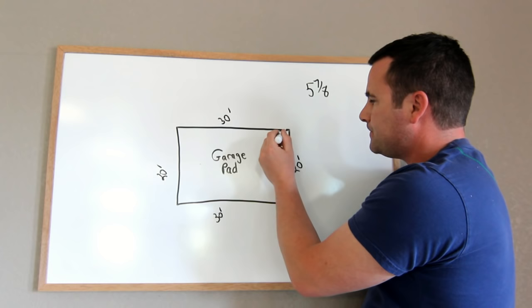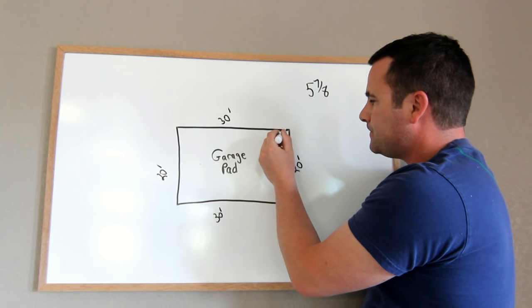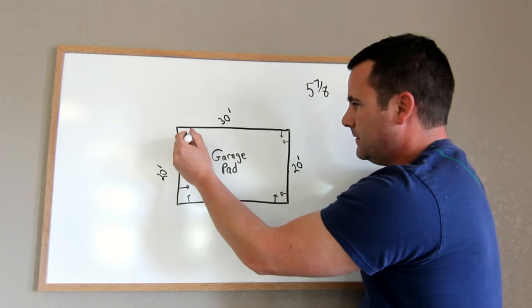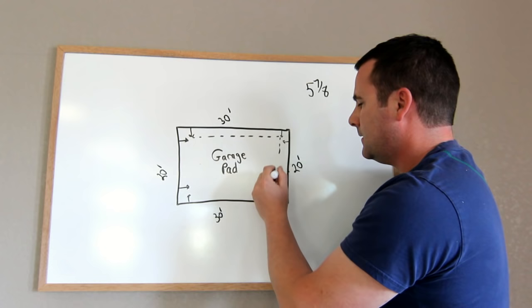But what I'm getting at is, typically you just measure in on all four corners, and you snap your chalk lines according to the garage pad, and then that's the inside of your framing.